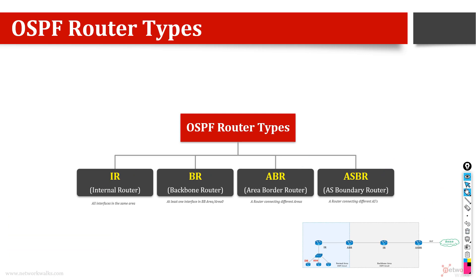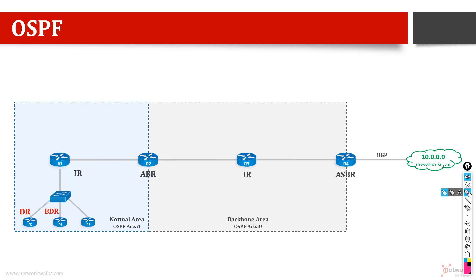Let's see the differences between these four types. In this general OSPF network, we have router number three. It has two interfaces — one on the left side, one on the right side. Both of these interfaces are within the same area. This is the backbone area. A router which has all interfaces within the same area, whether backbone or any other area, is called an internal router.